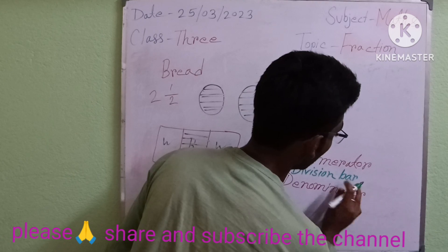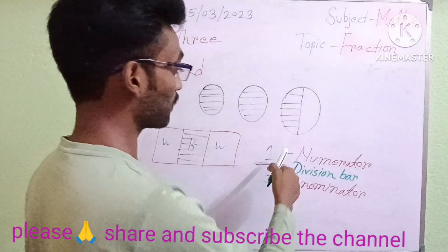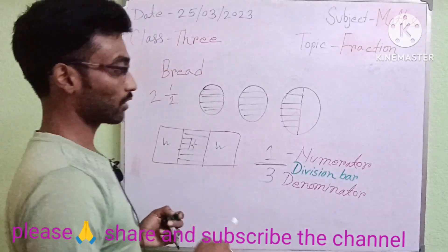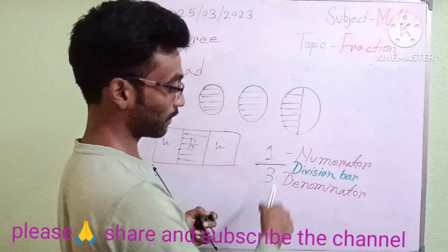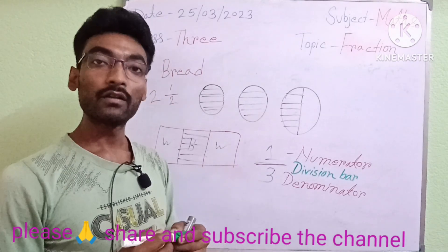This bar is called as division bar, and the upper part is numerator. In Bengali we call it lob. And the lower part is denominator. In Bengali we call it har.